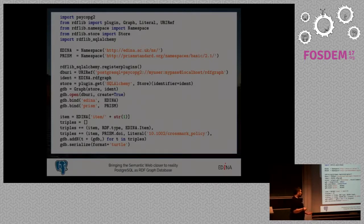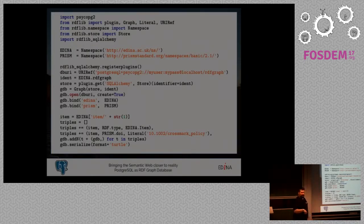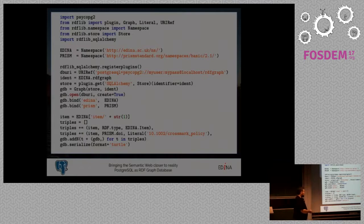We start to create our triples — we make an empty list and start populating it. We create an EDINA item, which is an object in the EDINA namespace, and give it a URI: item/[number], used as our identifier. We create a triple as a Python tuple: we give it the item, the predicate is RDF type, and the object is EDINA item — we're telling the object what it is. We also give it properties: another triple for the same item telling it that its DOI is a particular string.